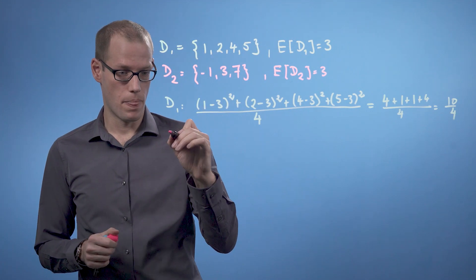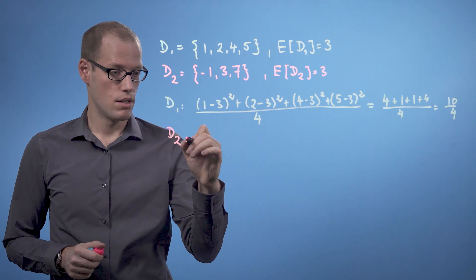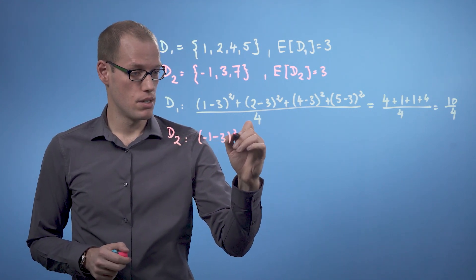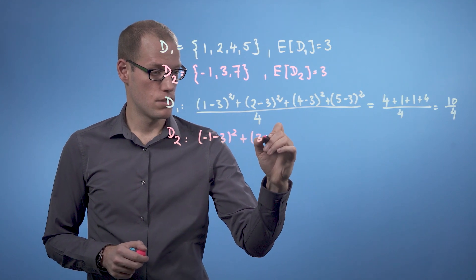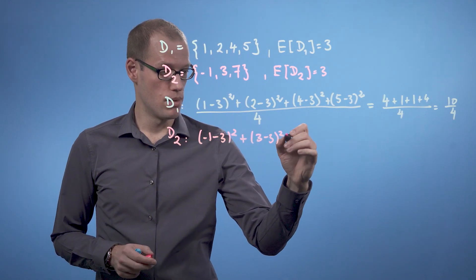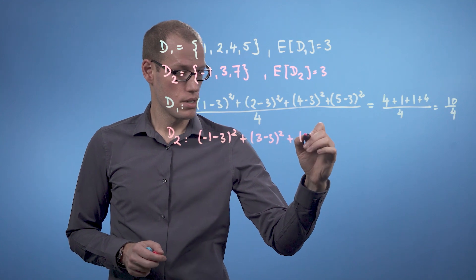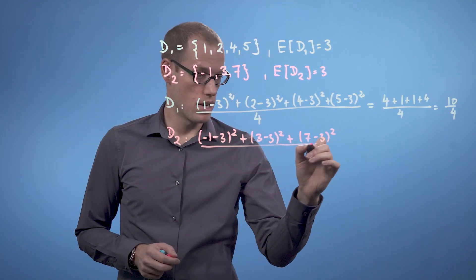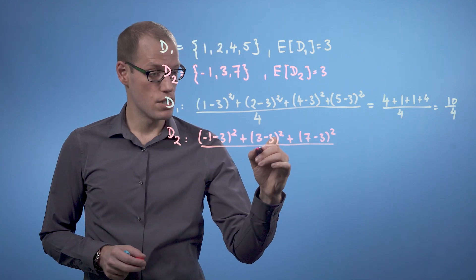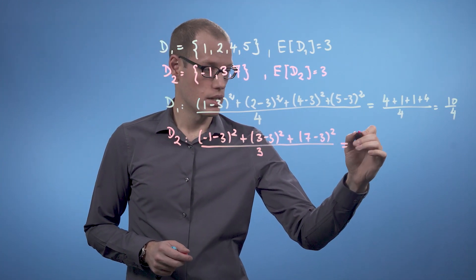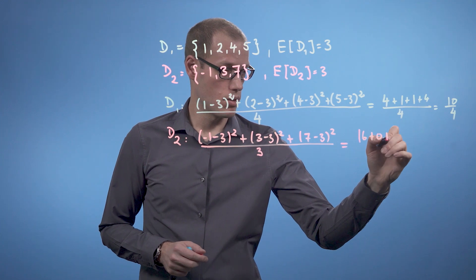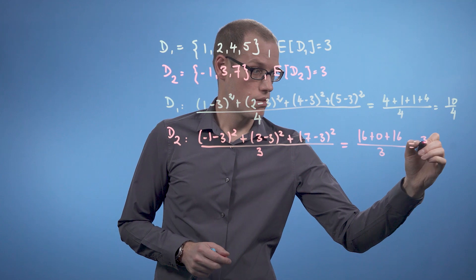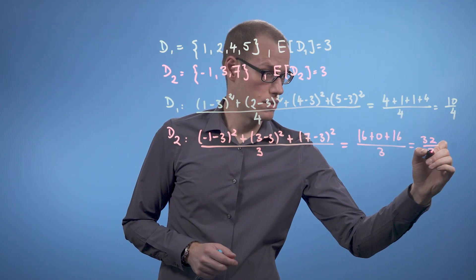So now we do the same for D2. And for D2, we get minus 1 minus 3 squared plus 3 minus 3 squared plus 7 minus 3 squared. And we divide by the number of data points in D2, which is 3. And we get 16 plus 0 plus 16 divided by 3, which is 32 over 3.